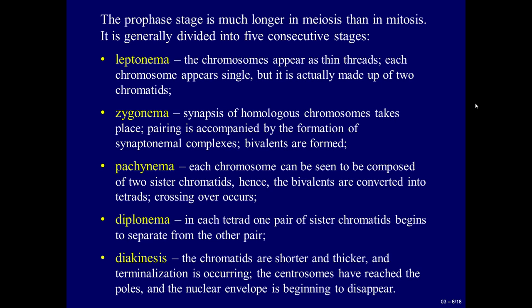The prophase stage is much longer in meiosis than in mitosis. It is generally divided into five consecutive stages. Leptotene: the chromosomes appear as thin threads. Each chromosome appears single, but it is actually made up of two chromatids. Zygotene: synapsis of homologous chromosomes takes place. Pairing is accompanied by the formation of synaptonemal complexes. Bivalents are formed.